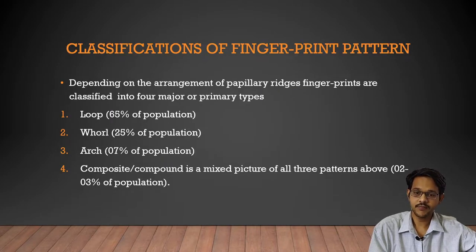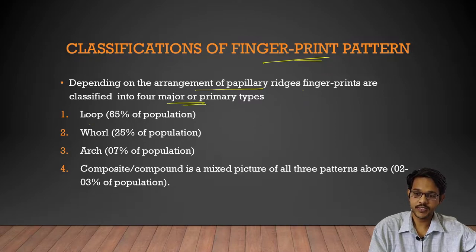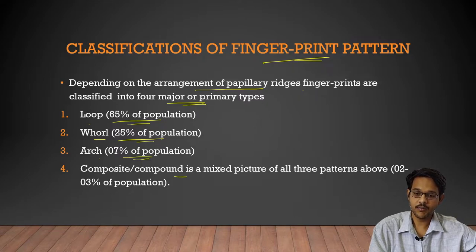Depending upon arrangement of papillary ridges, fingerprints are classified into 4 major or primary types: Loops, which consist of about 65% of the population; Whorls, about 25%; Arches, 7%; and Composites, which is a mixed pattern of all types, comprising about 2 to 3% of the population.